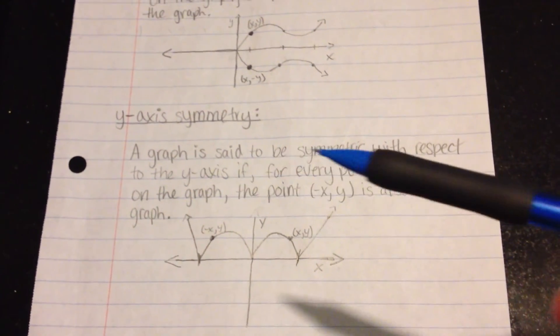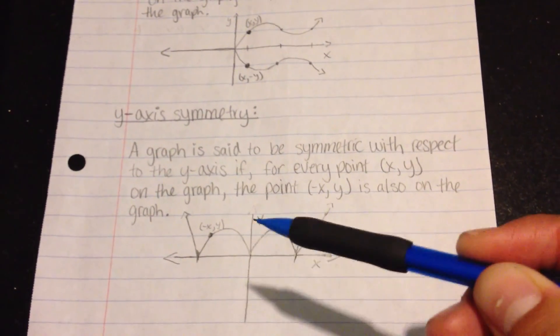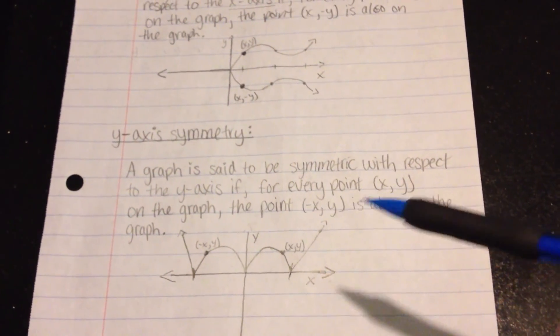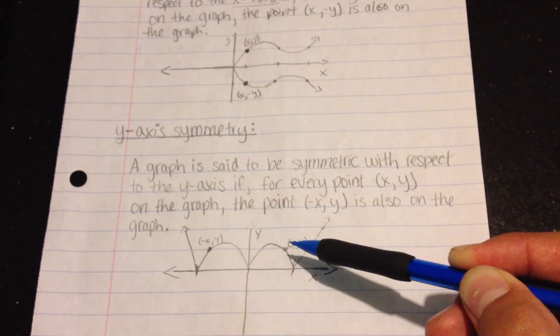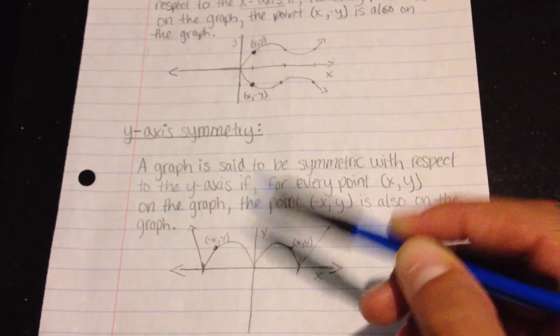Also, a graph is said to be symmetric with respect to the y-axis, that one right there, if for every point (x, y) on the graph, the point (negative x, y) is also on the graph.